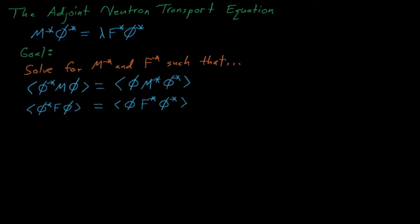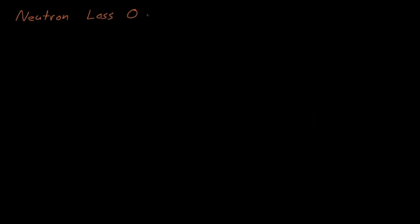Let's start with the neutron loss operator, m-star, and derive a function that will satisfy the property of adjoints. The neutron loss operator contains three terms: the leakage term, the scatter term, and the total collisional term.